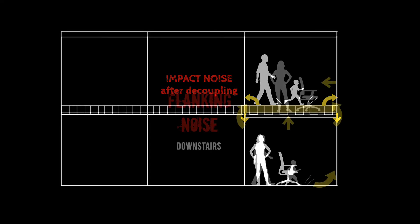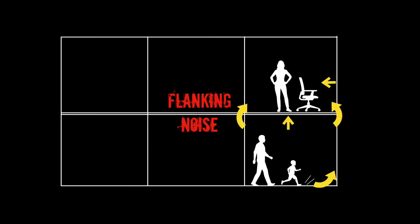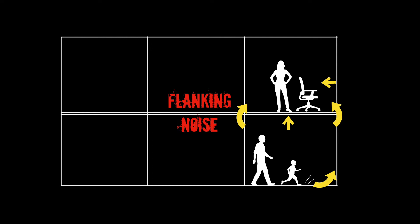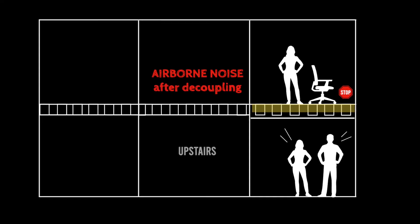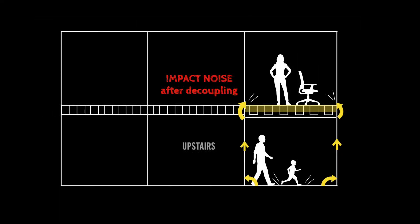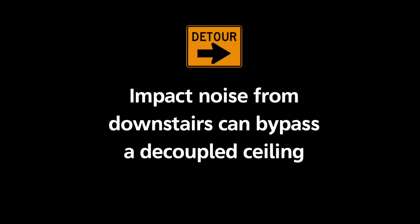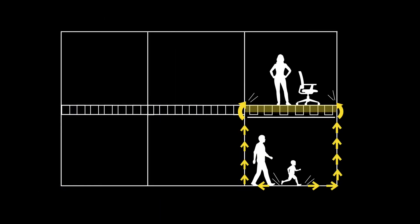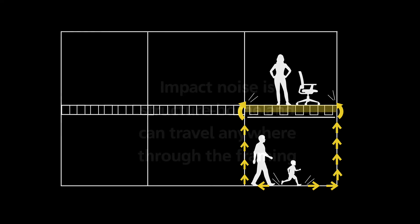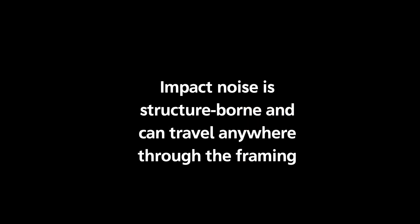But remember flanking noise. If there's a heavy enough impact, it could potentially still come through the framing into the downstairs walls. And what about the upstairs apartment? The airborne noise that comes from downstairs is pretty much gone, but the impact noise is not. The impact noise bypasses the new decoupled ceiling — the noise path goes from the floor to the wall studs and then into the floor joists upstairs. It's not going through the ceiling; it never did. So it doesn't matter if the ceiling is decoupled — it won't prevent the downstairs impact noise from traveling upstairs.